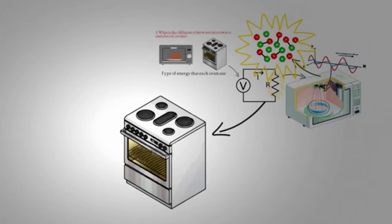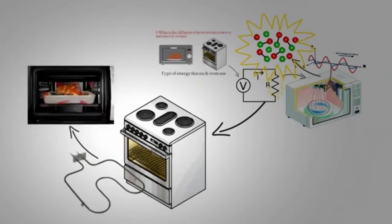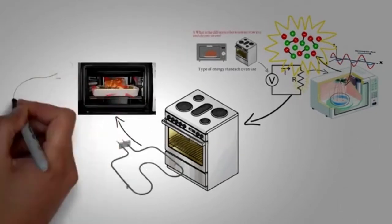However, in conventional electric oven, they use electric heat coils which heat up the air inside the oven. Thus, food will be heated by hot air from outside to inside.